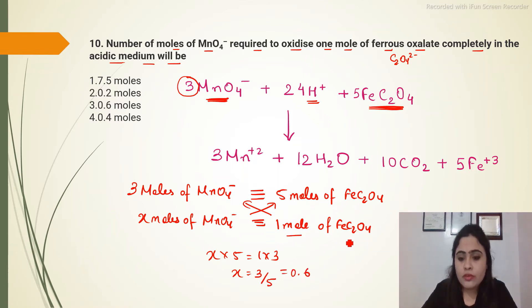That means 1 mole of C2O4 will be oxidized by 0.6 moles of KMnO4. The correct answer of this question will be option 3.